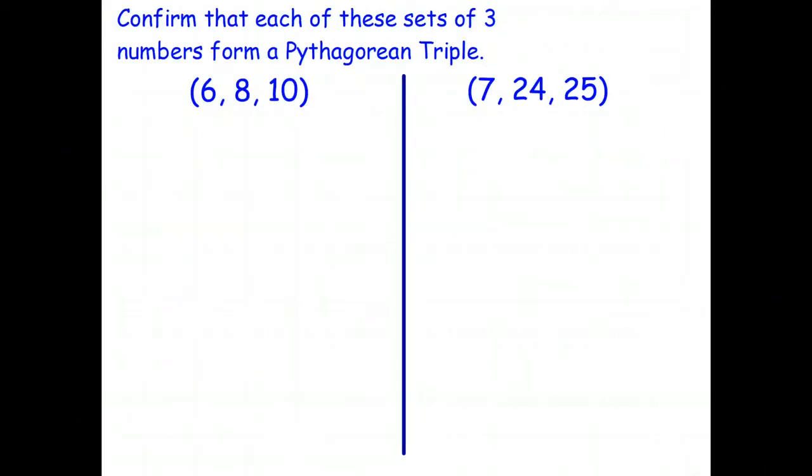Okay, what I'd like you to do is confirm that each of these sets of numbers forms a Pythagorean triple. So stop the video. In fact, I just did the one on the left, so you only have to do the one on the right. Prove to me that 7, 24, 25 is a Pythagorean triple. Stop the video, then restart it once you've done that.